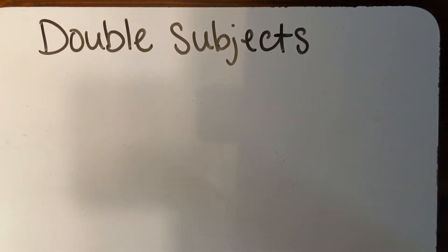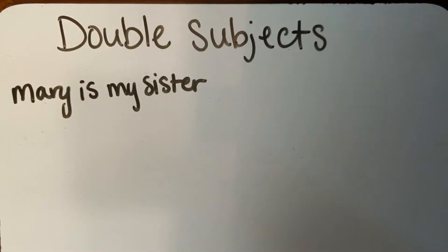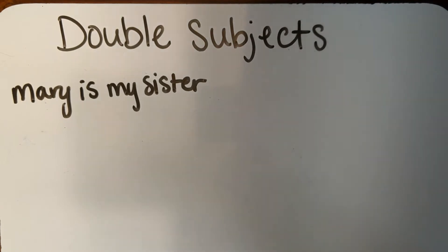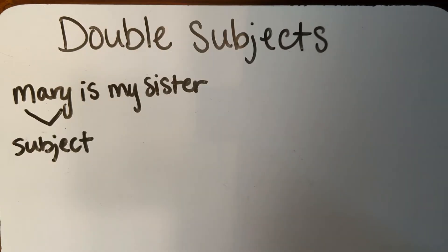We are going to learn about double subjects. You know that every sentence must have a subject. Sometimes people incorrectly use a double subject — a noun and a pronoun — to name the same person, place, or thing.